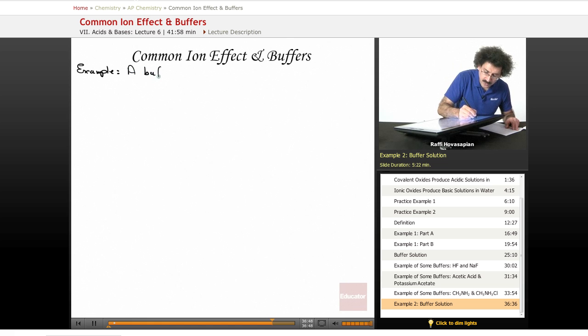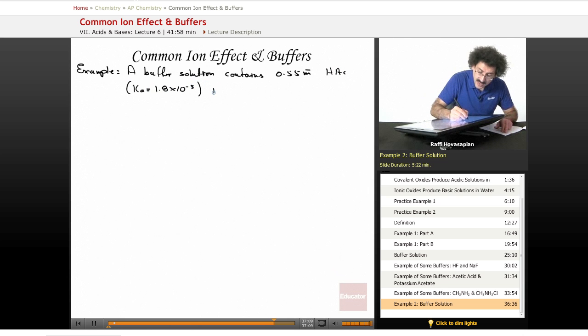A buffer solution contains 0.55 molarity acetic acid, HAC, the Ka of which equals 1.8 times 10 to the negative 5, and it contains 0.45 molarity sodium acetate, NaAC. Calculate the pH of the solution.